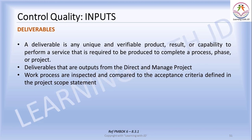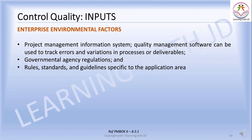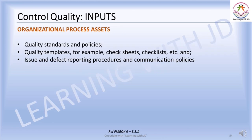Work performance data contains data on the product status such as observations, quality metrics, measurement for technical performance, as well as project quality information on schedule performance and cost performance. You also need the EEFs to know what is happening around the industry, and the OPAs — organizational process assets — which include the standards, policies, and templates.